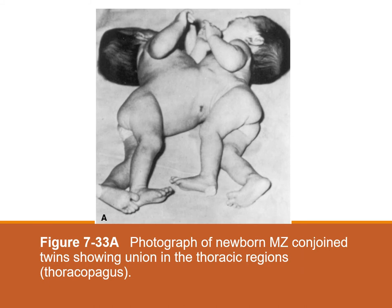If the embryonic disc does not divide completely, or adjacent embryonic discs fuse, it results in various forms of conjoined monozygotic twins. This photograph shows a newborn monozygotic conjoined twin with union in the thoracic region, called thoracopagus. The incidence of conjoined twins is estimated at 1 in every 50,000 to 100,000 births. In some cases the twins are joined only by skin and are easier to separate. However, when twins share organs such as the liver, stomach, or heart, successful separation without sacrificing one twin may not be possible.